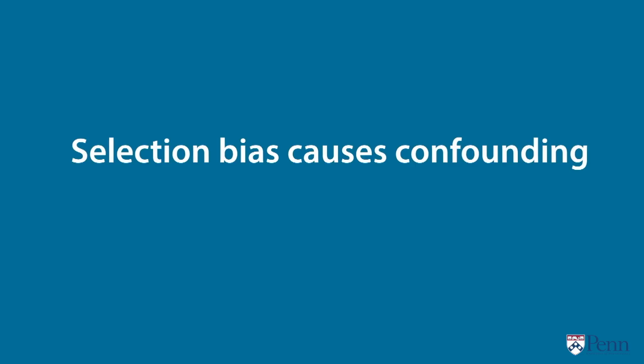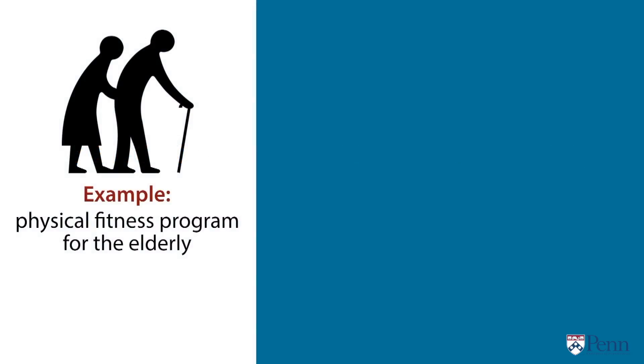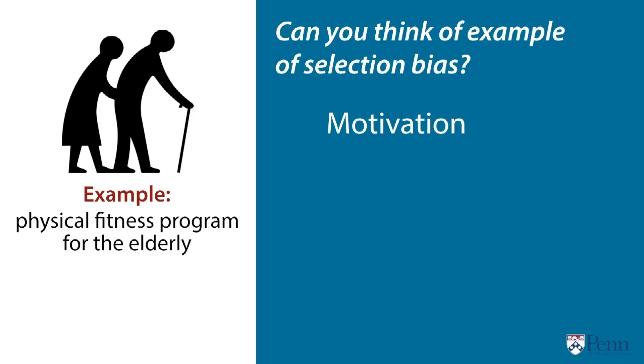Say you want to test whether a physical fitness exercise program for the elderly reduces heart attacks. How would you assign individuals to the intervention and the control? Can we just offer the program to everyone and look at differences between those who use it and those who don't? The short answer is no — because of selection bias causing confounding. Individuals who enroll in the program likely have other characteristics that make them prone to better outcomes, like motivation. It takes motivation to sign up and to exercise and do other healthful activities, so more motivated individuals are the ones likely to choose the program.